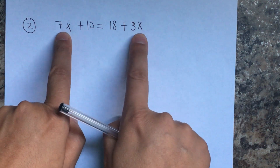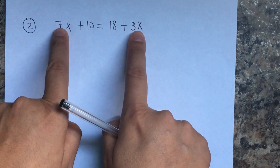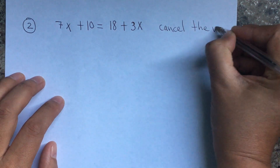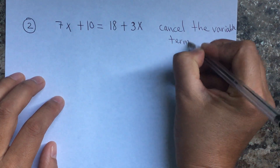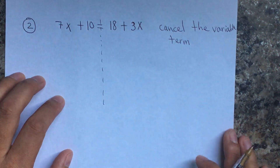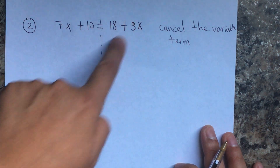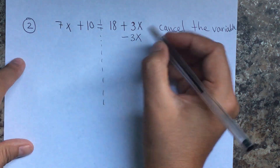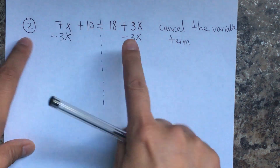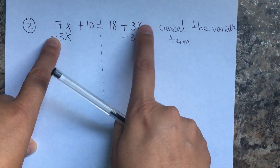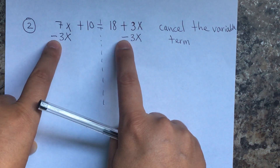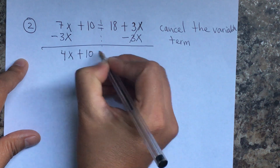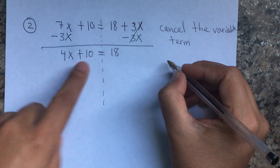Let's do another one. When you see variables on both sides, they are not combined like terms — some people say 7x plus 3x is 10x, but no. We cancel the variable term. We're going to draw the division line and cancel 3x from the right side by subtracting 3x from both sides. This cancels on the right, and we get 7x minus 3x equals 4x plus 10 equals 18.